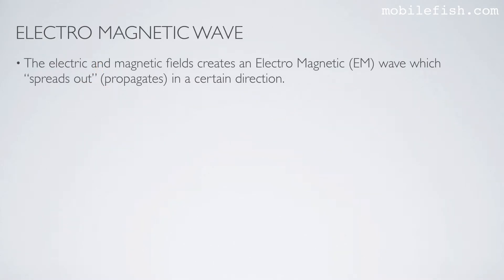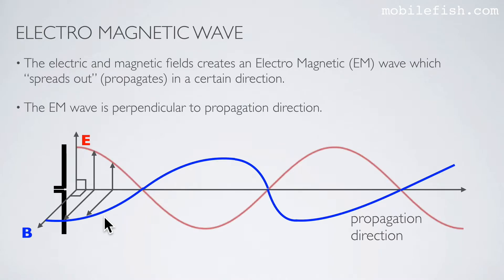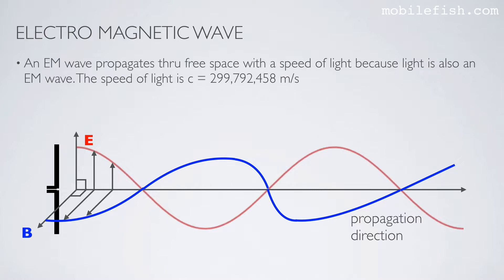The electric and magnetic fields create an electromagnetic wave which propagates in a certain direction. The electromagnetic wave is perpendicular to the propagation direction. An electromagnetic wave propagates through free space with a speed of light, 299,792,458 meters per second.